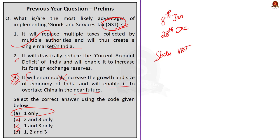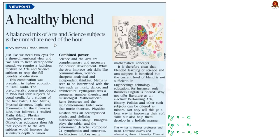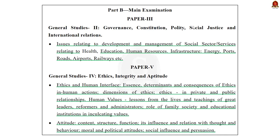Now let's move on to our first article discussion. This news article talks about the need for a judicious mixture of arts and science subjects in order to reap the full benefits of education. The author is talking about multi-dimensional education. Let us take this as an opportunity and learn what multi-dimensional education is and how it helps to reap the full benefits of education. The syllabus relevant to this news article is highlighted here for your reference.